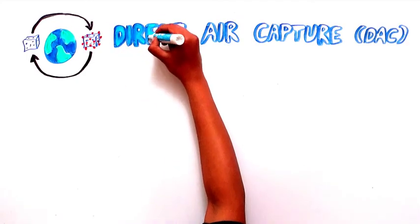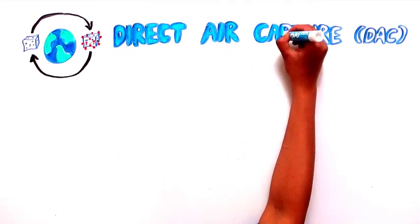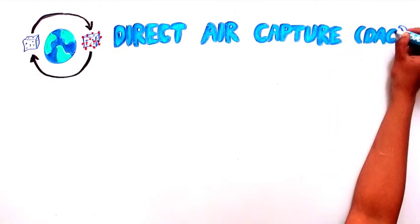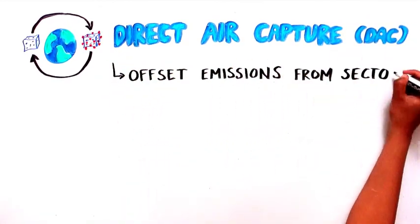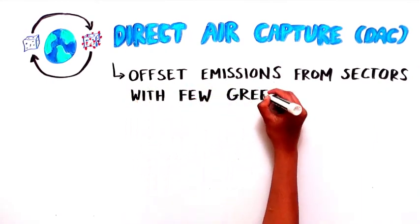One form of this carbon scrubbing technology is called direct air capture, or DAC. Direct air capture is a great tool to offset carbon emissions from industries that have very few green energy options.